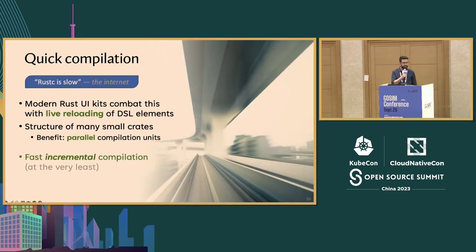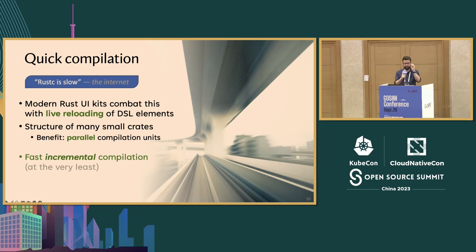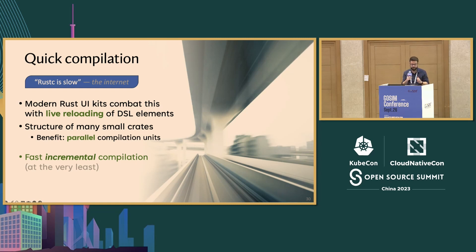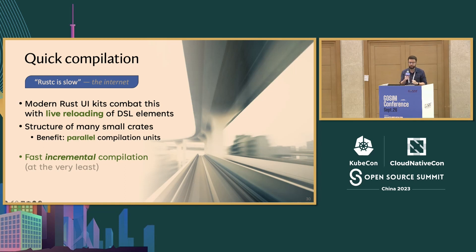The third requirement is quick compilation. Everyone seems to think that the Rust compiler is slow, but a lot of work has been done on that. These UI toolkits do a great job of combating this with live or hot reloading of their domain-specific language elements. Another way to tackle this is by structuring the project as a bunch of small crates to benefit from parallel compilation. At the very least, if we can't get fast compilation from a clean build, we want to target fast incremental compilation.